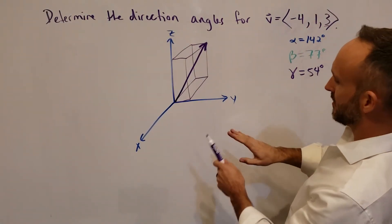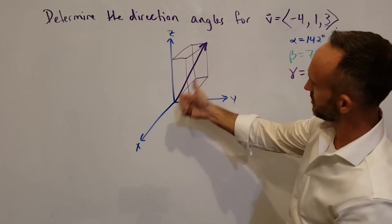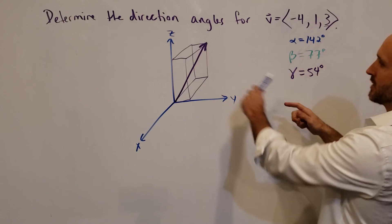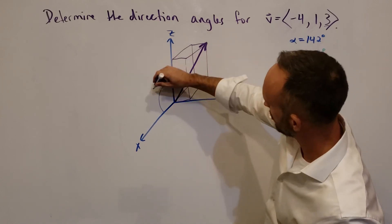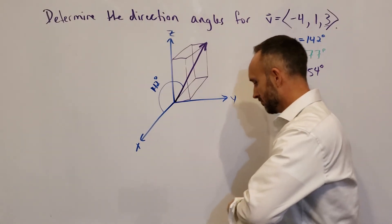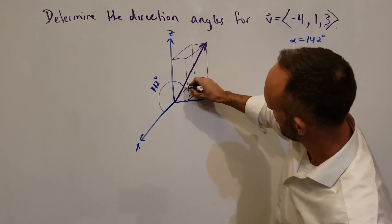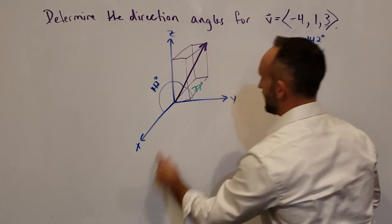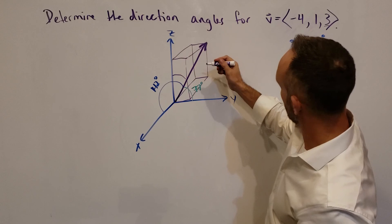You can see the vector is behind the yz plane — back there and to the right. Alpha is the angle between this vector and the positive x-axis — that swings around to about 142 degrees. Beta is the angle between this vector and the positive y-axis — the vector is tilted back off the yz plane, so that angle swings around to about 77 degrees. And gamma is the angle between the vector and the positive z-axis — with the vector tilted back, that's 54 degrees.